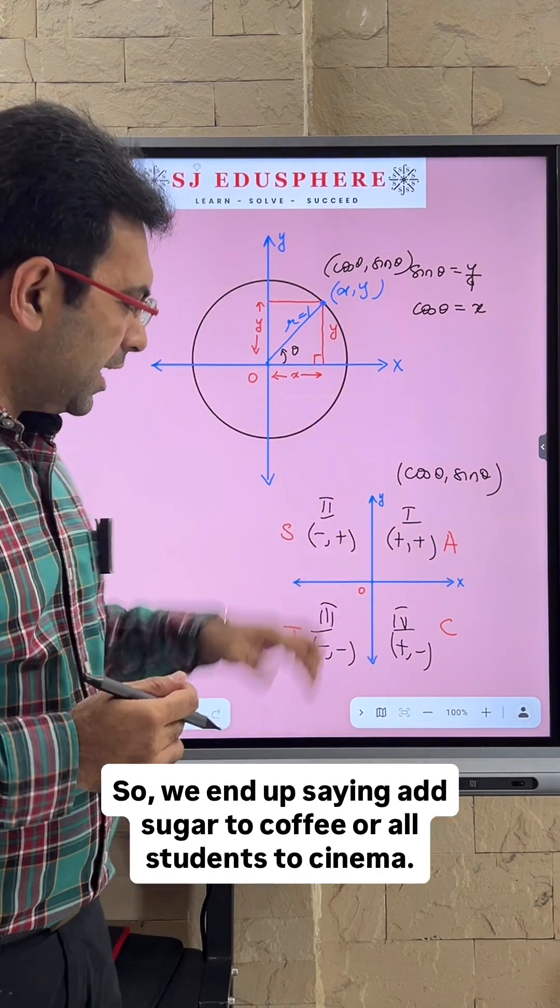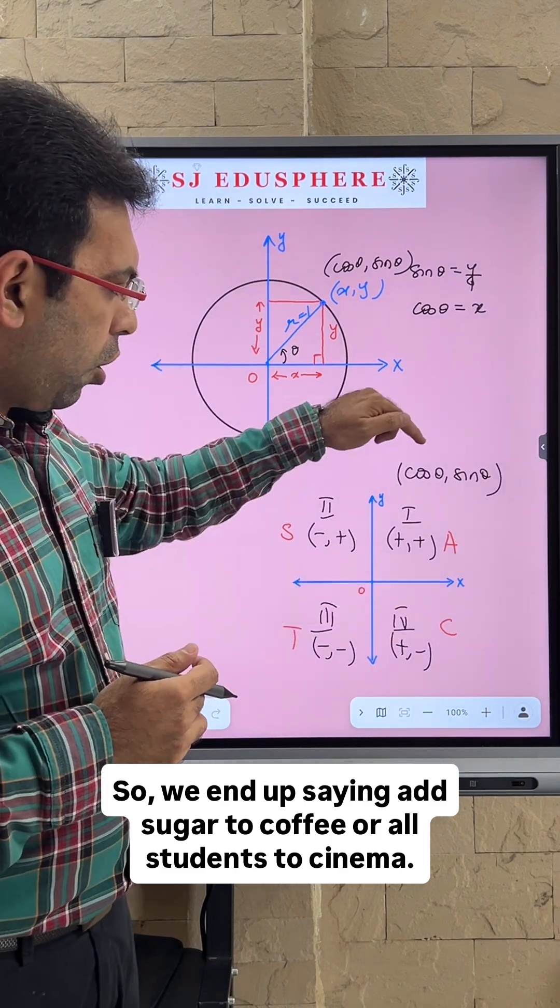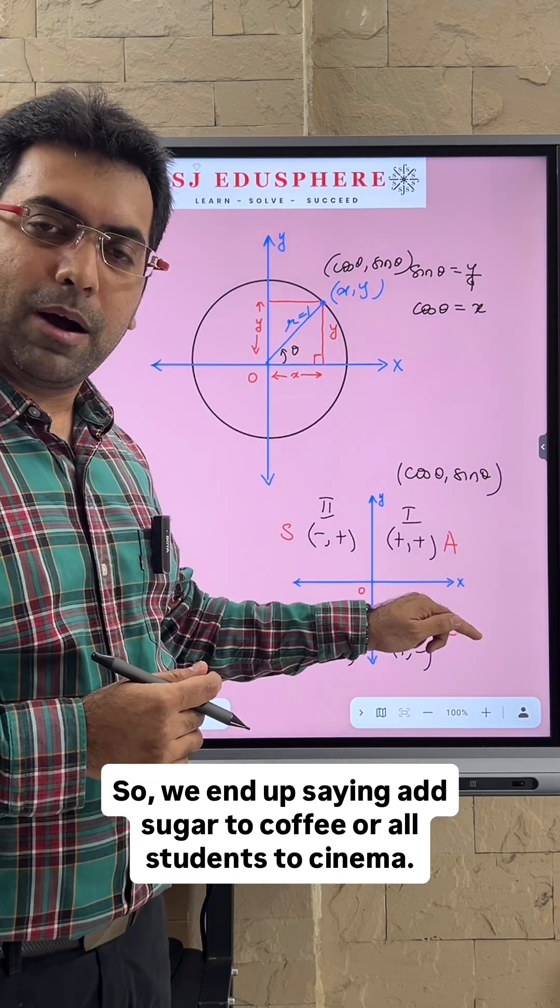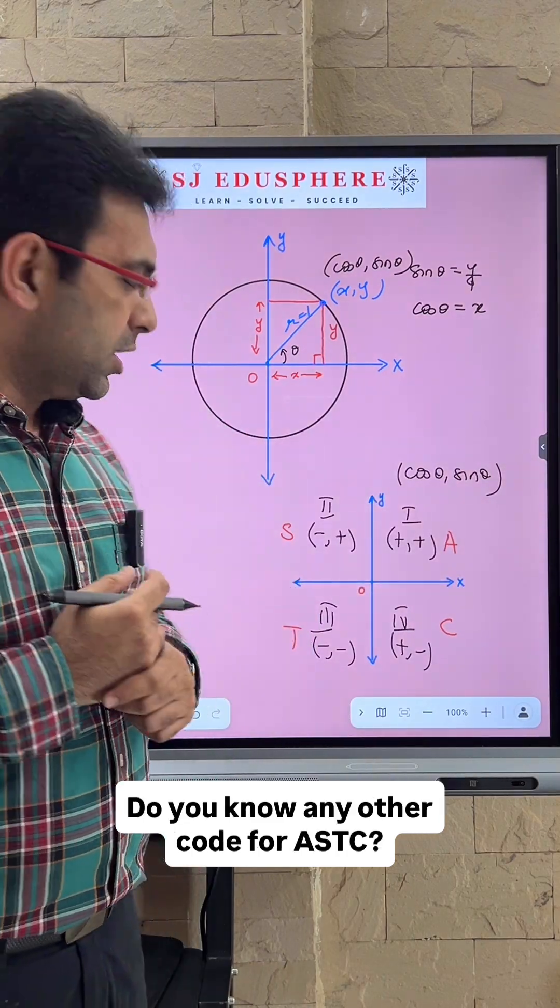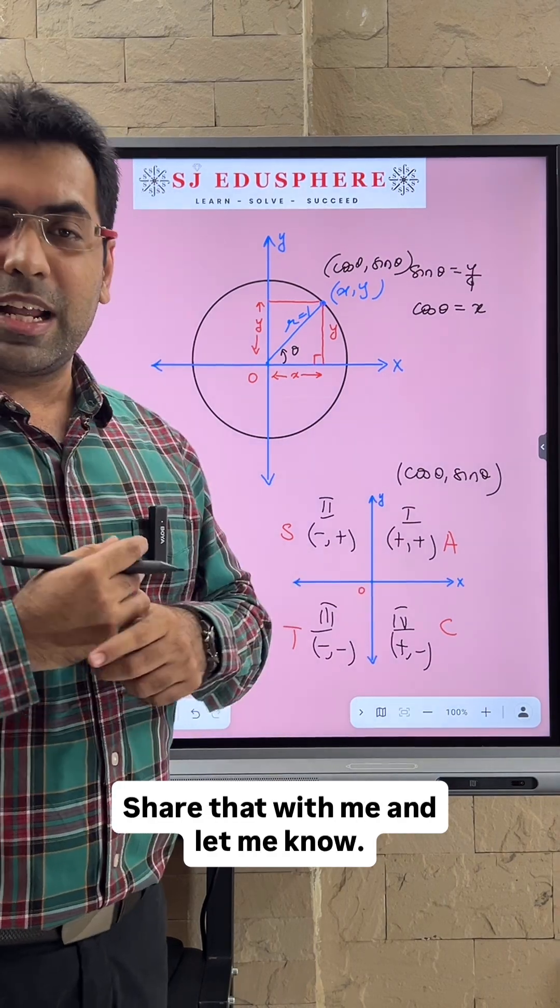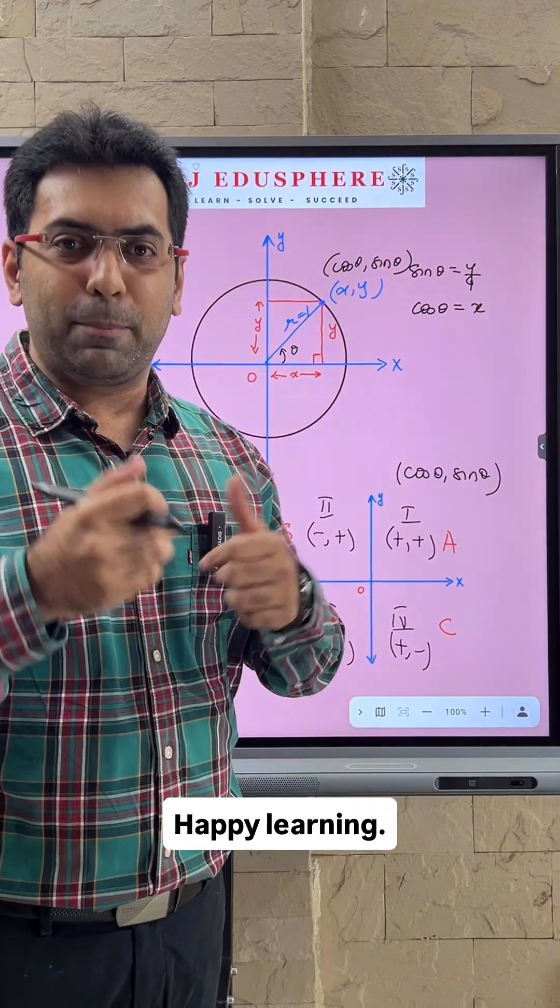So we end up saying 'add sugar to coffee' or 'all students to cinema.' That is how we remember the sign convention. Do you know any other code for ASTC? Share that with me. Happy learning!